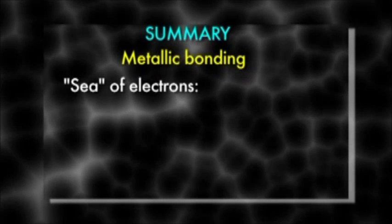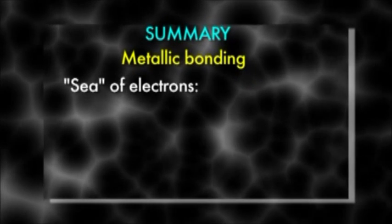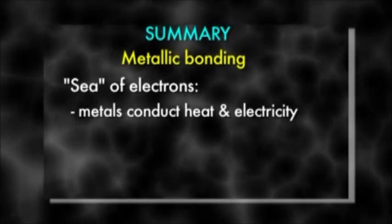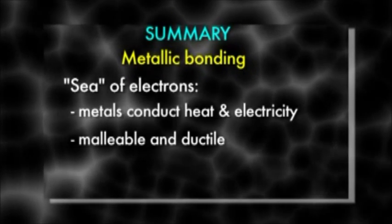The mobile sea of electrons explains many properties of metals. Metals are good conductors of heat and electricity. They are malleable and ductile, and have a lustrous sheen.